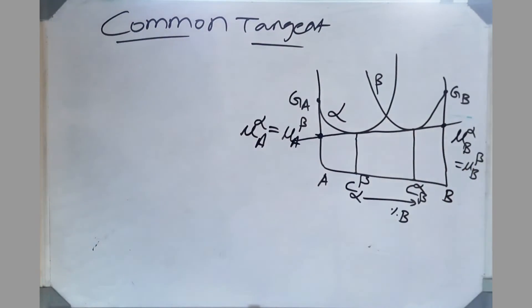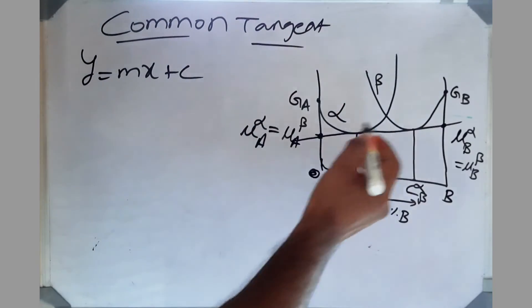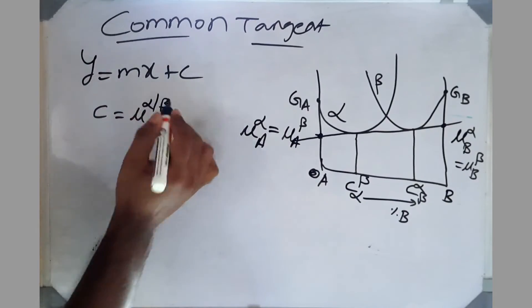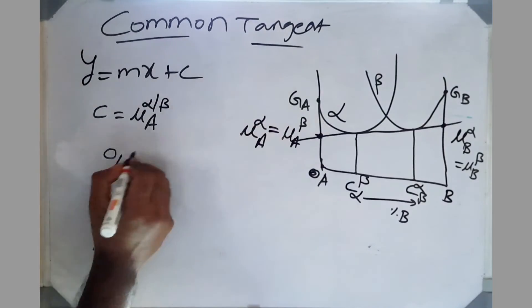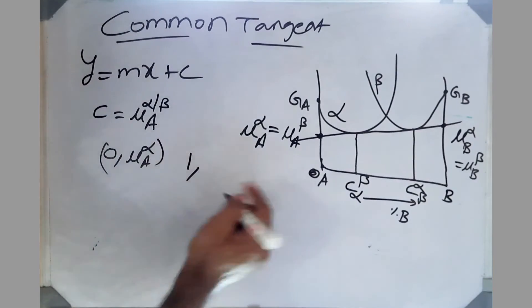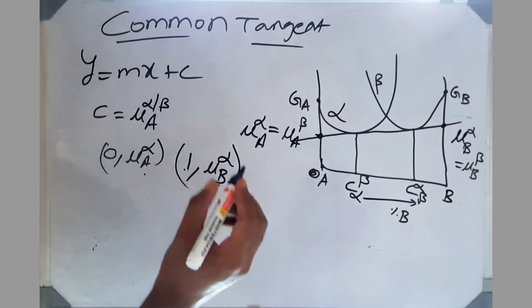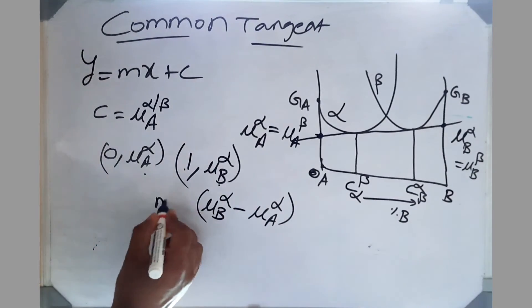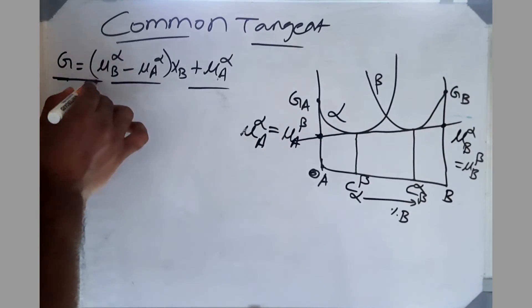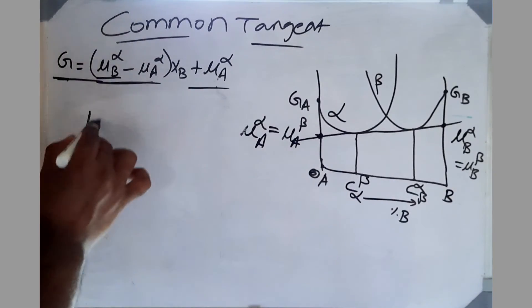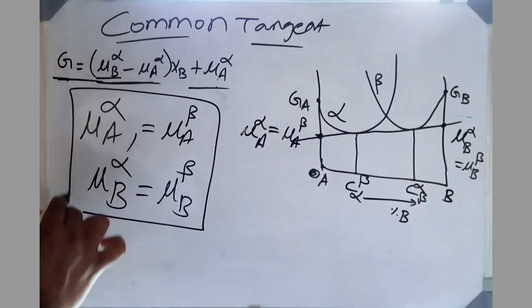Now we need to derive the common tangent equation. For a tangent line: Y = mX + C. Taking the left intercept as the origin, the y-intercept C is the chemical potential of A in alpha (μ_A^α). The left endpoint is (0, μ_A^α) and the right endpoint is (1, μ_B^α), since X_B goes from 0 to 1. The slope m = (μ_B^α − μ_A^α) / (1 − 0) = μ_B^α − μ_A^α. Substituting, the common tangent equation for free energy G is: G = (μ_B^α − μ_A^α)·X_B + μ_A^α. The catch is that we still need to find the values of μ_A^α and μ_B^α explicitly.